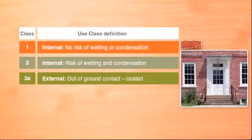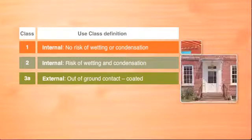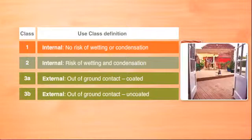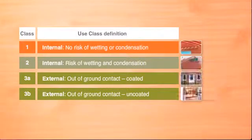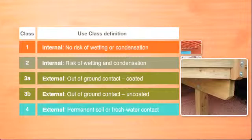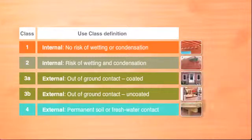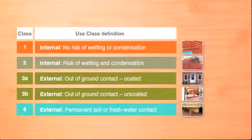Class 3A: External, out-of-ground contact, coated. Class 3B: External, out-of-ground contact, uncoated. And Class 4: External, permanent soil or freshwater contact, giving a minimum service life of 15 years. Treatments to give a 30-year and 60-year service life are also available.